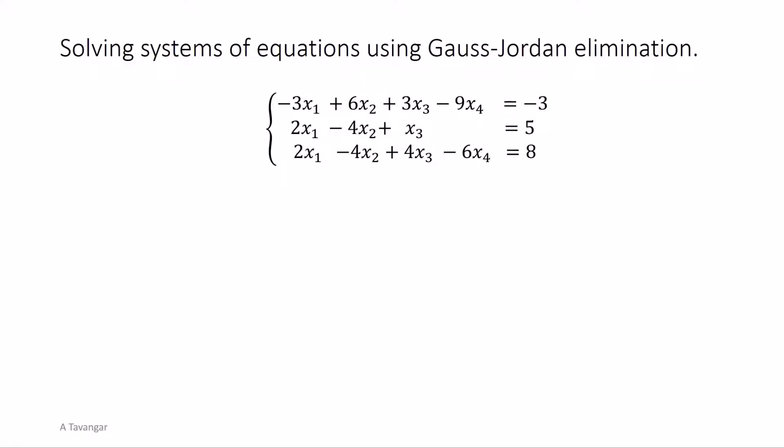Hello everyone, in this video we will solve a system of three equations in four variables using Gauss-Jordan elimination. Along the way we will also learn how to set up the augmented matrix for a system and how to carry it to row echelon and reduced row echelon form.